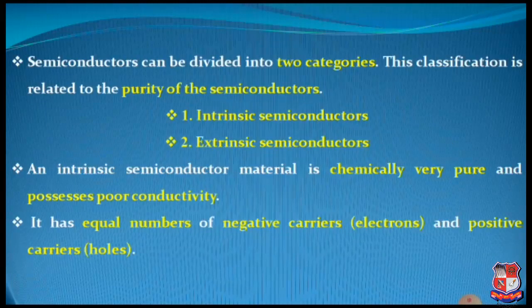First of all we will recall the definition of semiconductor, which is a type of electronic material whose electrical conductivity is slightly higher than the insulator but lower than that of conductors as well as superconductors. The classification of semiconductors can be carried out in two categories. This classification is related to the purity of semiconductors, so the two major types we are going to discuss today are purely focused on the purity of their semiconductors.